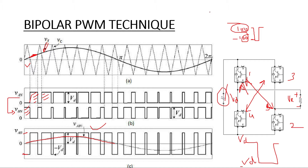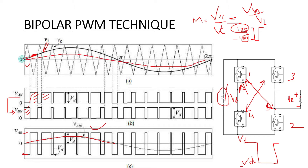Now if I want to change the output voltage, there is a technique we already know — that is our modulation index. Basically, the modulation index is the voltage of the reference to the voltage of the carrier, or the amplitude of the modulating wave to the amplitude of the carrier wave. So if we vary our modulating wave voltage — if we increase or decrease the magnitude of our sine wave — the area of the pulse will increase or decrease, and with this we can change the output voltage.